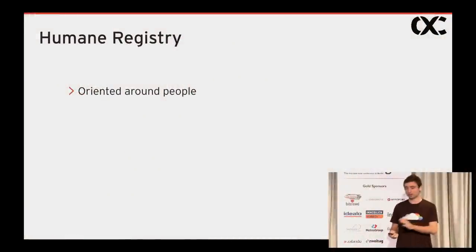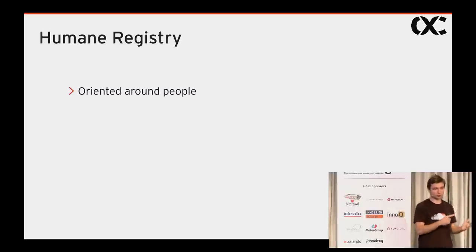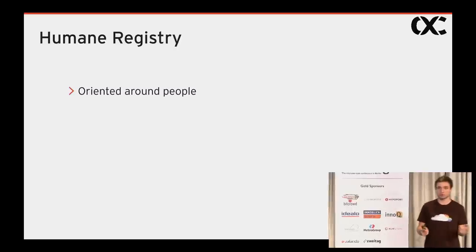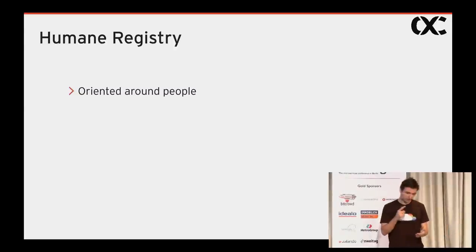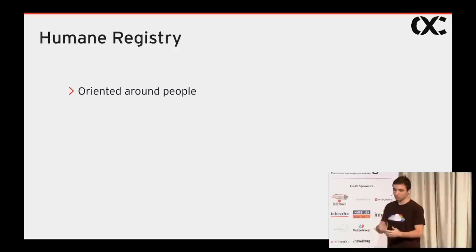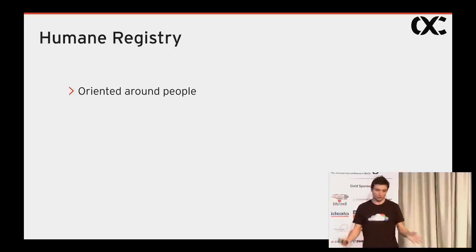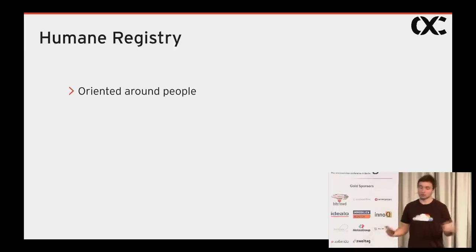The article describes building a tool that answers these kinds of problems with three main guiding principles. The first is that it should be oriented around people, because most of the questions we ask are related to people. For example: who created this microservice, who did the most contributions, who did the latest contribution, who deployed this microservice, how often it is deployed, who handled the latest incident, and who closed the latest story involving work on this microservice.